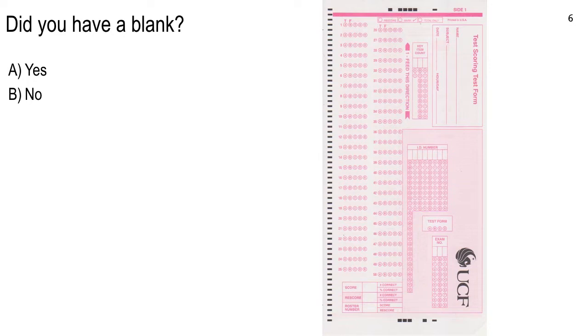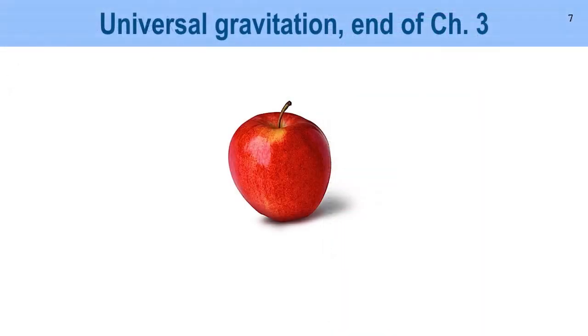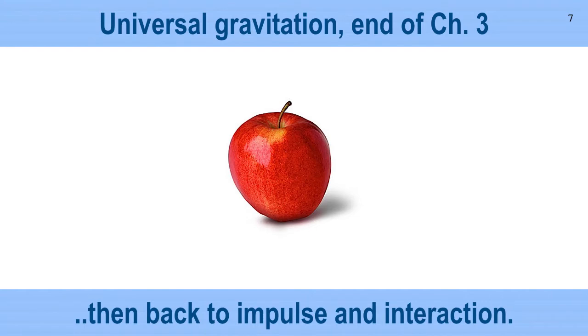Let's keep going. Our next topic is actually the end of Chapter 3, Universal Gravitation, which we kind of skipped over to talk about the skateboard interaction between Bob and Carl. And now we're going to dip backwards to finish Chapter 3. And then when we finish Chapter 3, Gravitational Concepts, then we'll maybe get back to some impulse and interaction.